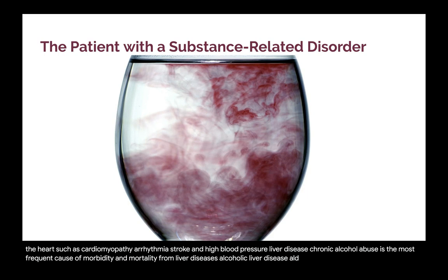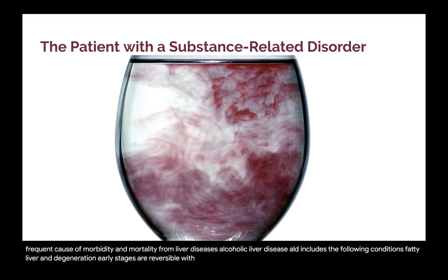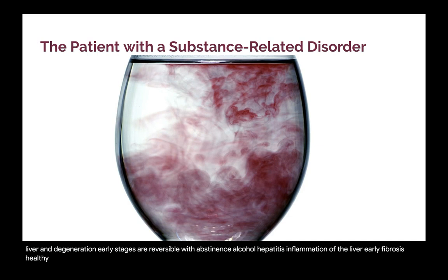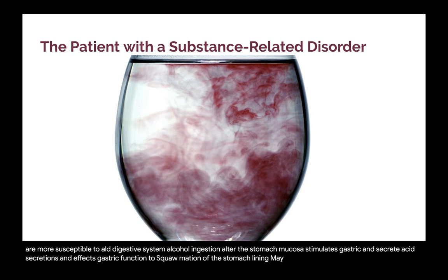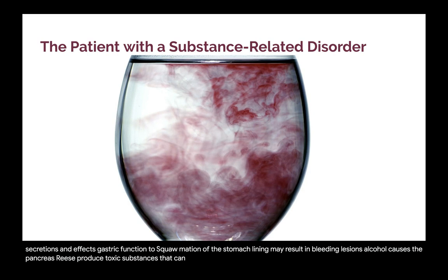Alcoholic liver disease (ALD) includes the following conditions: fatty liver and degeneration — early stages are reversible with abstinence; alcoholic hepatitis — inflammation of the liver with early fibrosis, healthy cells replaced by scar tissue; cirrhosis — scarring of the liver with irreversible damage. Individuals with hepatitis C virus are more susceptible to ALD. Digestive system: alcohol ingestion alters the stomach mucosa, stimulates gastric acid secretions, and affects gastric function. Desquamation of the stomach lining may result in bleeding lesions. Alcohol causes the pancreas to produce toxic substances that can lead to pancreatitis, injury to the small intestines, diarrhea, weight loss, and vitamin deficiencies.